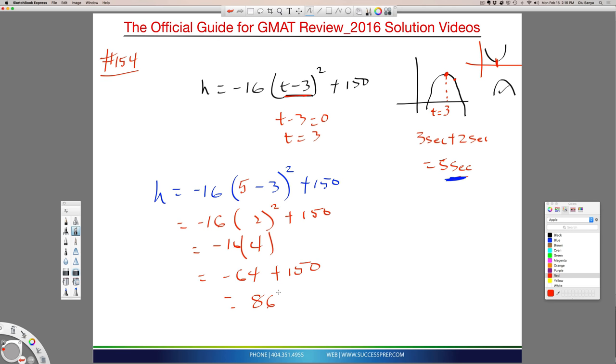It's whatever the height is. 86 feet. So the answer there is B. So watch this video again because you want to be familiar with what I just said there. Because it's negative, I know it's upside down. I know that's the max point by solving this inside. Two seconds later will be 5 seconds. And then you threw that 5 in the original equation and you get 86 feet.